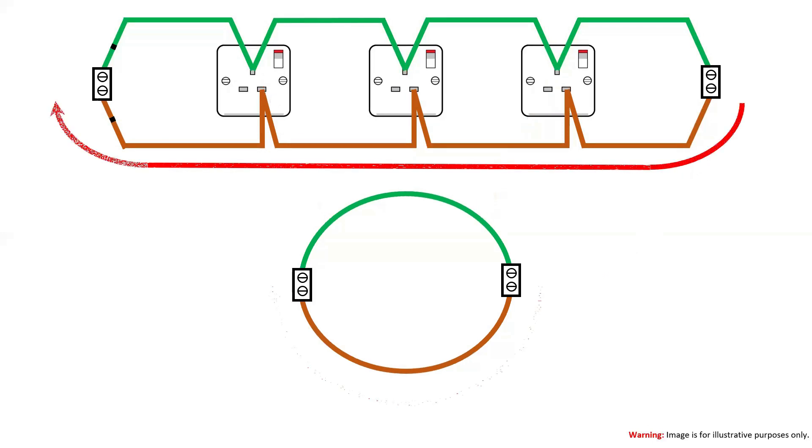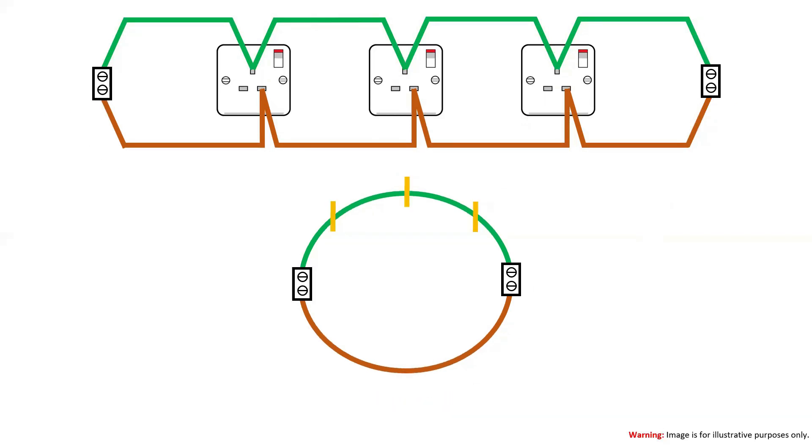With the line conductor continuing around clockwise, if I were to strike a dotted line through the ring to show where the socket positions are connected for the CPC, we can then do the same for the line conductor. Some of you may even be able to predict where the line conductors are also going to be, as they will follow the same pattern around the line conductor as the sockets are equidistant, which we can see here.